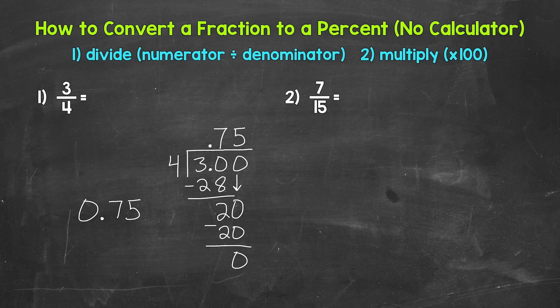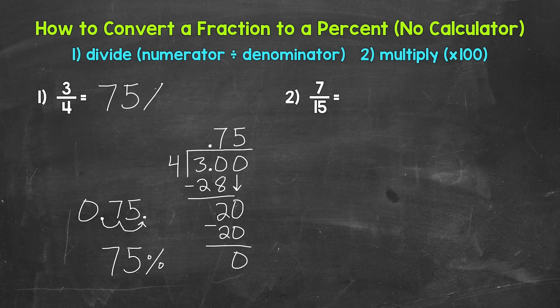So three fourths in decimal form is 0.75. Let's multiply it by 100 to convert it to a percent — move the decimal twice to the right: once, twice. This gives us 75 percent. We don't need the decimal at the end since we have a whole number. So three fourths equals 75 percent.